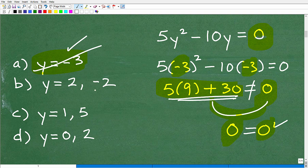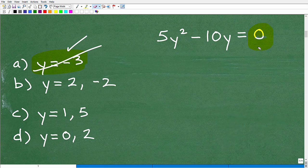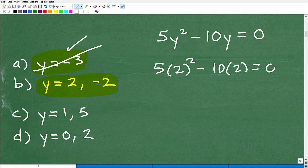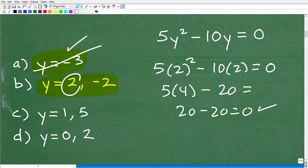At this point I've already increased my odds. Let's do another one. Let's move on to y equals 2 and negative 2. Let's just check for 2 real quick. So 5 times 2 squared, that's 2 squared is 4, so that's 5 times 4 minus 10 times 2 is 20. This looks pretty good. This is 20 minus 20, that's equal to 0. Oh wow, 2 works. So 20 minus 20, that is 0, is equal to 0. So 2 is good.